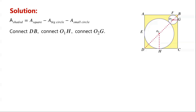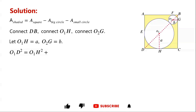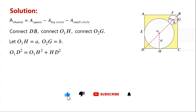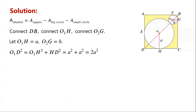O1H is the radius of the larger circle, and O2G is the radius of the smaller circle. We let O1H equal A and O2G equal B. By the Pythagorean theorem, O1D squared equals O1H squared plus HD squared, which equals A squared plus A squared, which is 2A squared. So O1D equals root 2 times A.